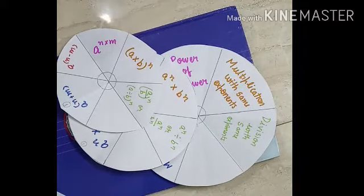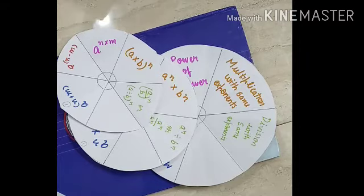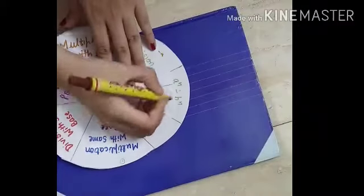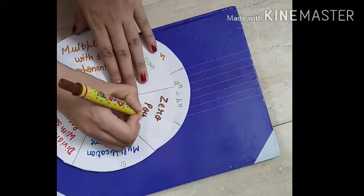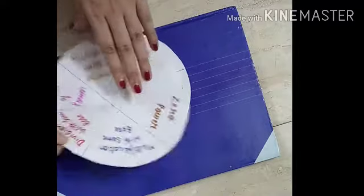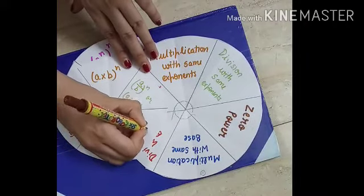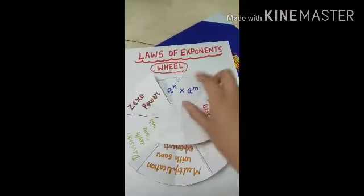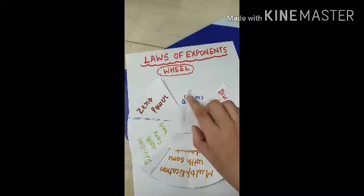Moving on to the last rule, that is zero power. That is the easiest. We have only six rules for exponents. Zero power means a raised to power zero, and the answer is one. For any number a. Now I have put the smallest circle on the bottom, and I have placed the center which I have marked, and I'm putting a yellow sketch pen mark.